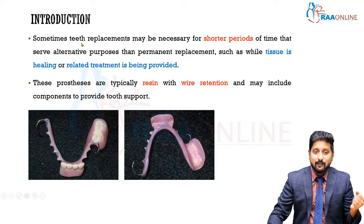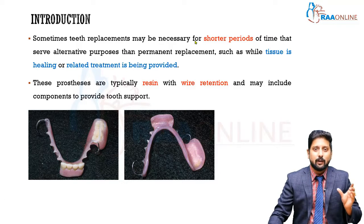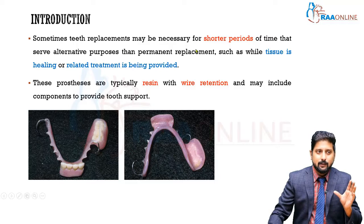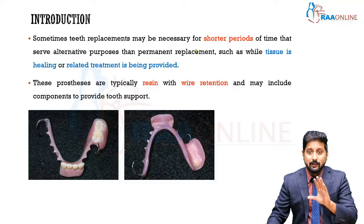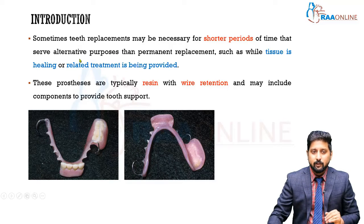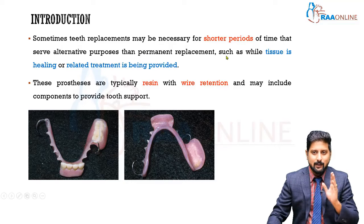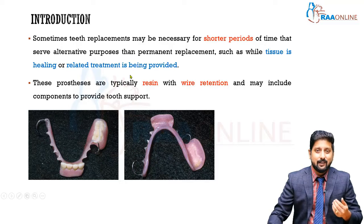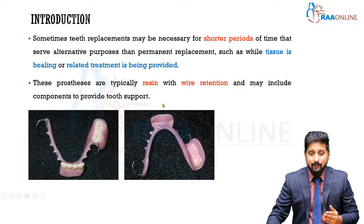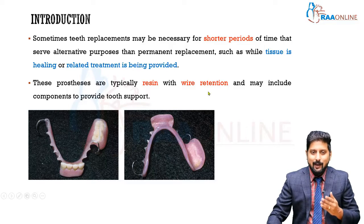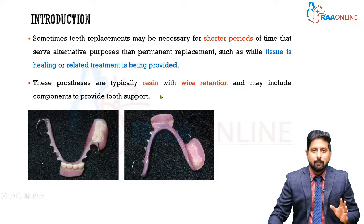When do you give these temporary removable partial dentures? When teeth replacement may be necessary for shorter periods — not for a definitive treatment plan, but for a short period to provide teeth while tissue is healing or related treatment is being provided. These prostheses are typically resin-based with wire retention and may include components to provide tooth support.